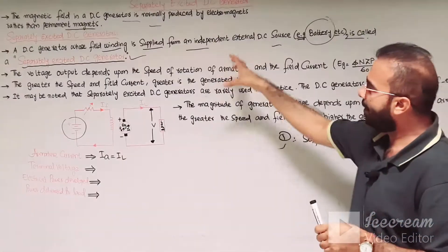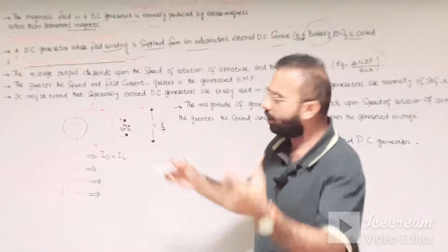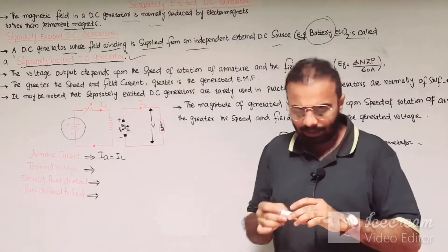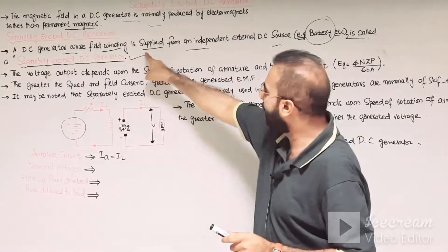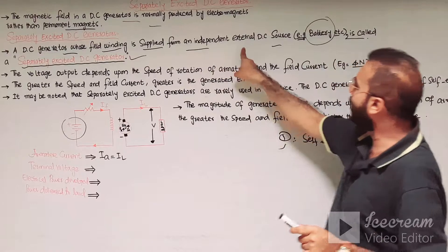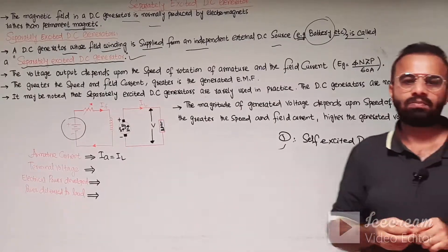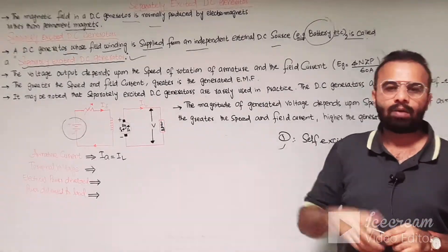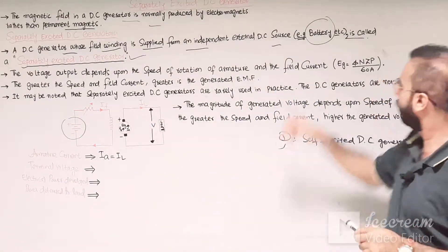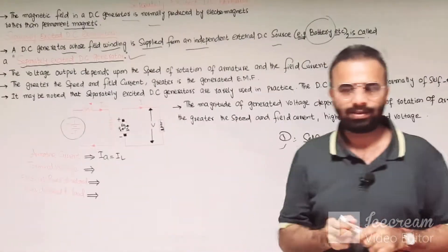What is the separately excited DC generator? The definition is: a DC generator whose field winding is supplied from an independent external DC source. That independent external DC source is normally a battery, and that is why it is called the separately excited DC generator.